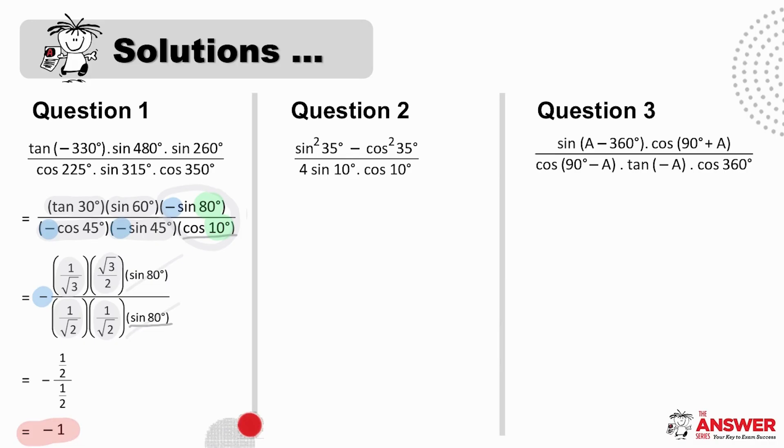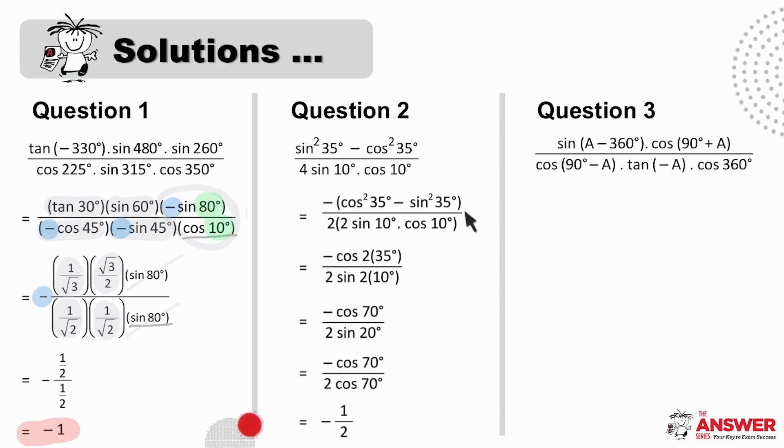Question 2 is a little different. First of all, each factor is already a ratio of an acute angle, and then we have a difference of squares in the numerator, or if you flip the terms around carefully, you have the negative of cos double angle. The denominator is looking very close to sine double angle expansion, except instead of a 2, there is a 4. You can split the 4 up into 2 times 2, and then you have 2 times sine double angle. This is then minus cos 70 over 2 sine 20. Apply co-ratios and you can cancel. You could also have changed cos 70 to sine 20. The answer for question 2 is minus a half.